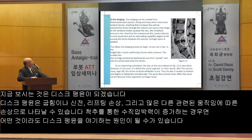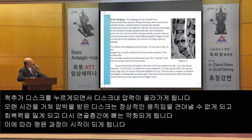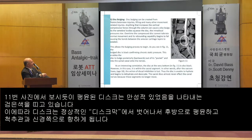Disc bulging can be created from flexion-extension injuries, lifting, and many other movement-related injuries. Anything that increases the vertical compressive forces through the column can result in a disc bulge. As the vertebral bodies squeeze the disc, the intradiscal pressure rises. Over time, the compressed disc cannot tolerate normal movement and its rebounding capability begins to fail, causing the bonds between the annular cartilage layers to weaken. This allows the bulging process to begin. As seen in Figure 11, the bulged disc is black, confirming chronic static pressure, enabling the disc to bulge posteriorly into the spinal canal and onto the nerves.